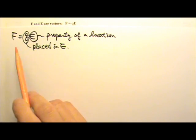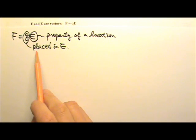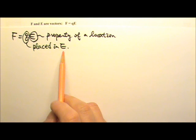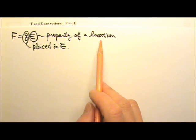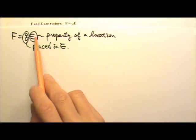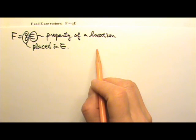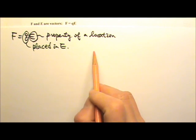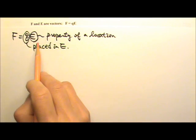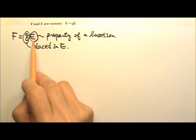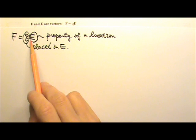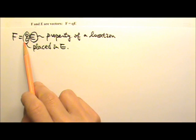In F equals QE, the charge Q is the one that is placed in the electric field. This electric field is the property of a location, so we can talk about the electric field at a certain location. If we place a charge there, we can use this to find the force on that charge. This electric field is produced by some other charge distribution, not this charge.